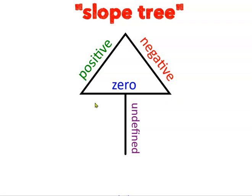And sometimes they use something here called the slope tree. As you're traveling along to draw this tree, you would be moving positively upwards, negatively downwards, horizontally zero, and then vertically for undefined.